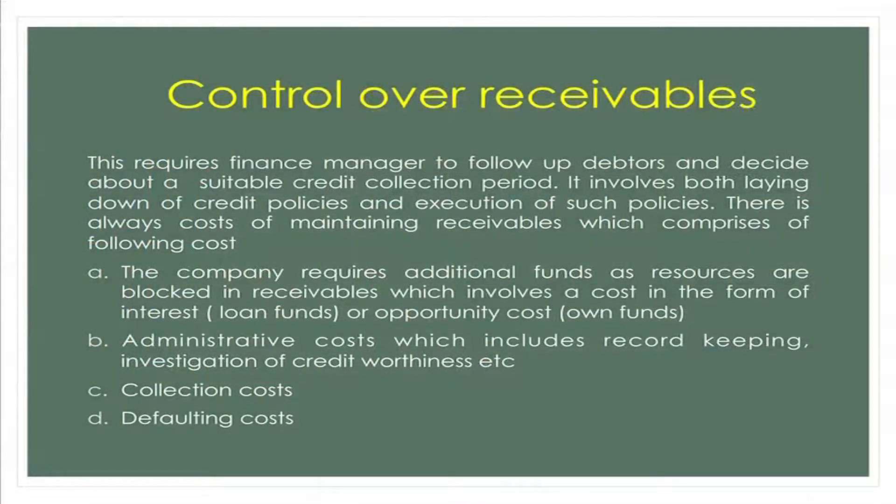Opportunity cost refers to the interest that would have been earned had the funds been freely available for investment. Loan fund cost is the interest paid for using borrowed funds. Administrative cost is incurred for record keeping and investigating the credit worthiness of debtors. Collection cost includes commissions paid to collection agencies. Defaulting cost refers to bad debts — losses on account of irrecoverable debtors. These are the four costs to manage for controlling receivables.